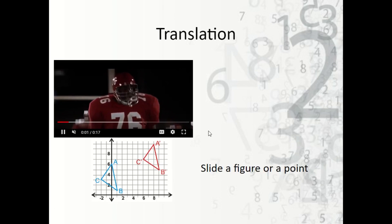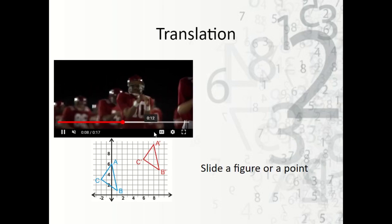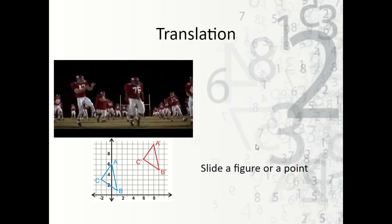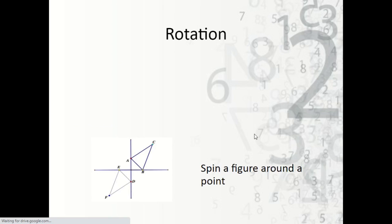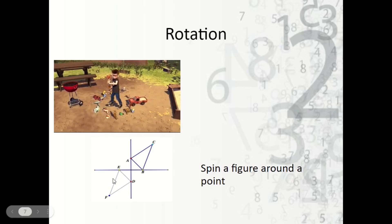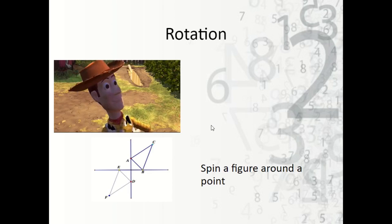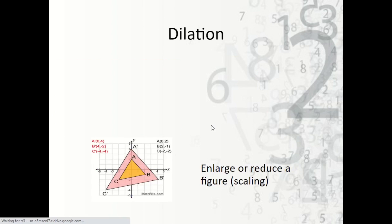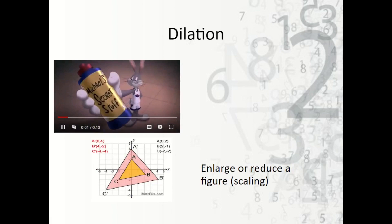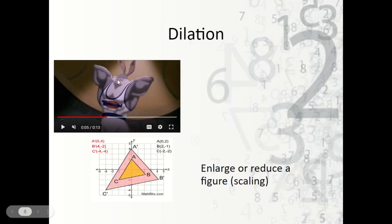Translation is a slide movement — we have a triangle and we slide it over and to the right, kind of like the players on Remember the Titans sliding and moving around. Rotation is a spin movement — we have our triangle and if we spin it around it becomes this one, kind of like Woody's head spinning. And dilation means we're going to get bigger or smaller — we have a triangle and it gets bigger, kind of like Bugs who drinks the special stuff and becomes a big buff bunny.